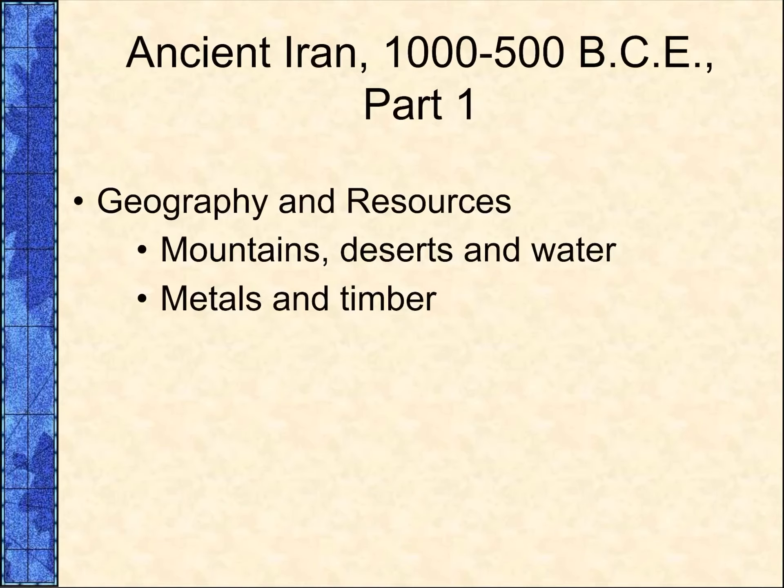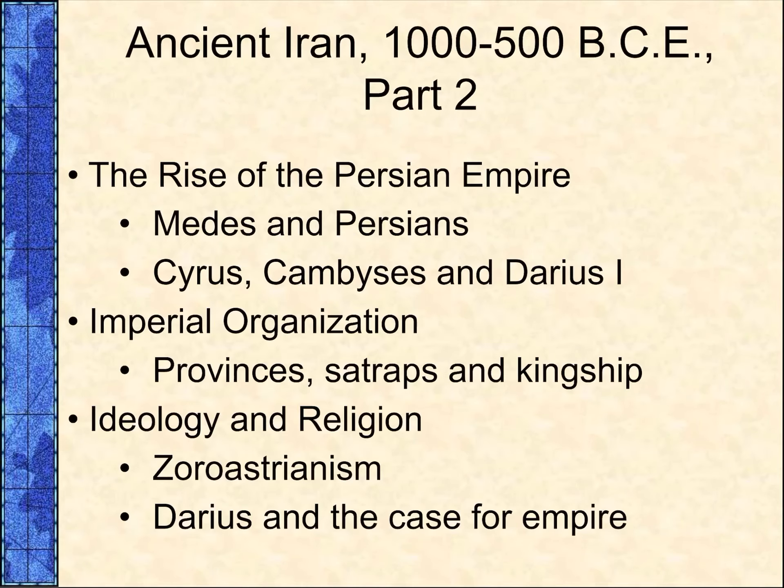Construction and maintenance of underground irrigation networks was labor intensive and advanced under a strong central authority. Iran had mineral resources — copper, tin, iron, gold, and silver — and plentiful timber.